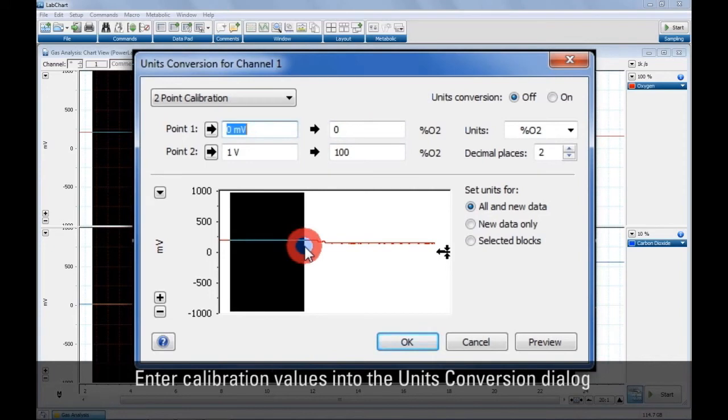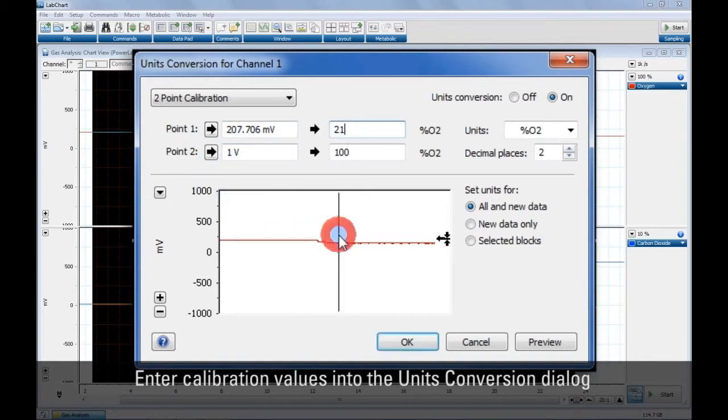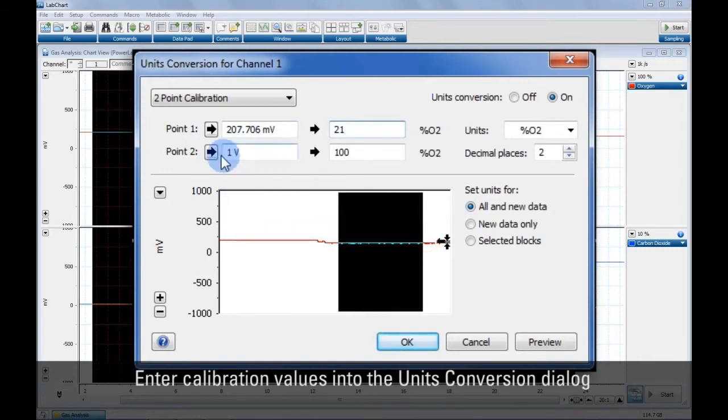Choose either carbon dioxide or oxygen from the relevant channel function pop-up menu to open the correct dialog. Enter calibration values into the unit's conversion dialog. Details on calibrating can be found in the LabChart help. Note that the Use default units checkbox in the carbon dioxide or oxygen dialog can be checked to restore the default conversion values.